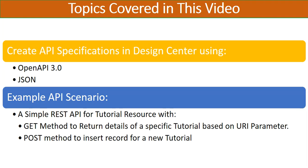The scenario we are going to cover is creating a specification for a very simple RESTful API — a Tutorials API with only one resource: the tutorial resource. For that resource we will provide two methods. The GET method will return details of a specific tutorial based on a path parameter — a URI parameter named tutorialId. The POST method will be used to insert a new record, with fields like tutorialId, tutorial title, description, and author.